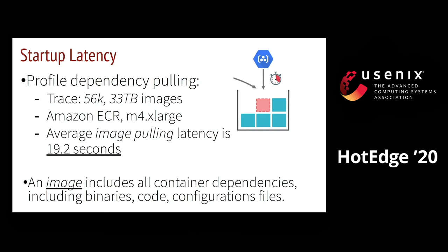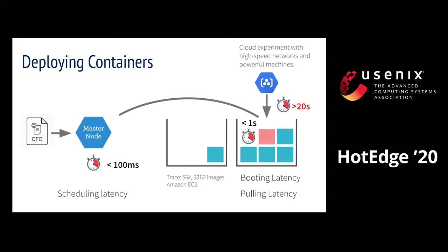We also add instrumentation to get the scheduling time on Kubernetes and the container boot time on Docker for the other two steps. These numbers, as they do not involve network transfer and file decompression, should be less affected in an edge cluster setup. As we measure the time for each of the three steps, we see that image pulling latency is the dominant contributor to startup latency.